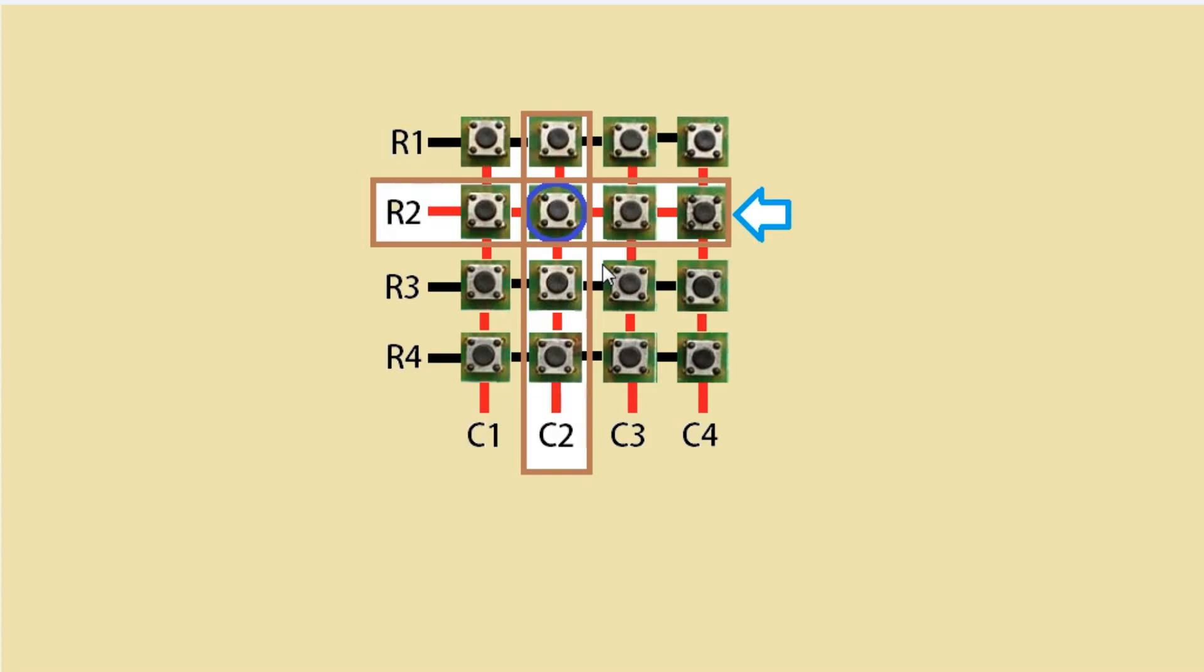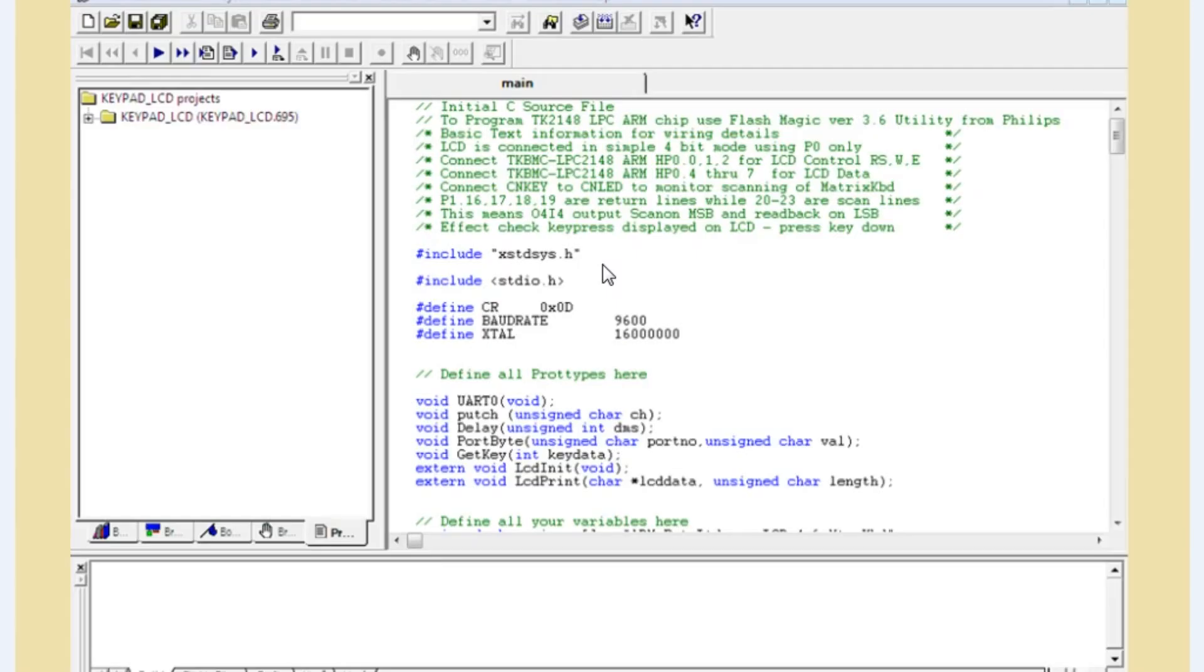Now, write this code for the keyboard in which keyboard will act as an input and the pressed key will be shown on the serial communication or on LCD.